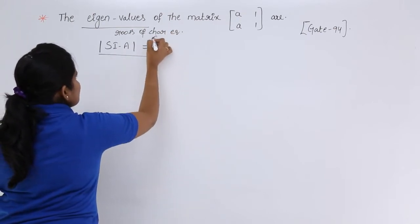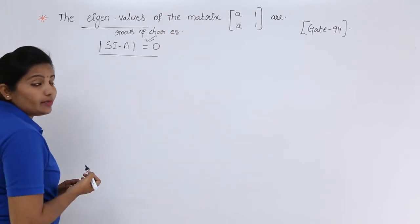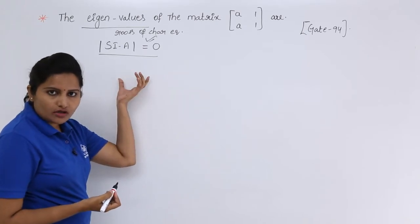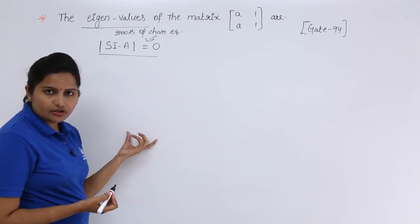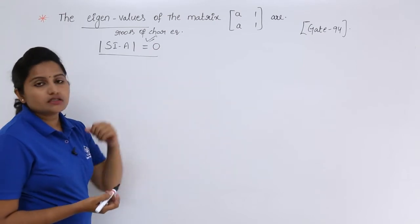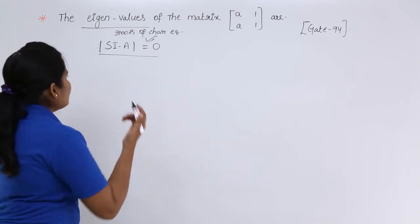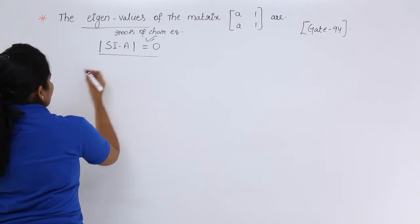Characteristic equation is nothing but Si minus A modulus is equivalent to 0. If you are solving this and finding the roots, then you will get your eigenvalues. And now, I am going to solve this equation.